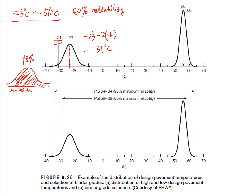Similarly, we add two standard deviations to the mean high temperature: 56 plus 2 times 2 equals 60 degrees Celsius. So the binder should have a range from negative 31 degrees Celsius to 60 degrees Celsius. This binder will have 98 percent reliability.